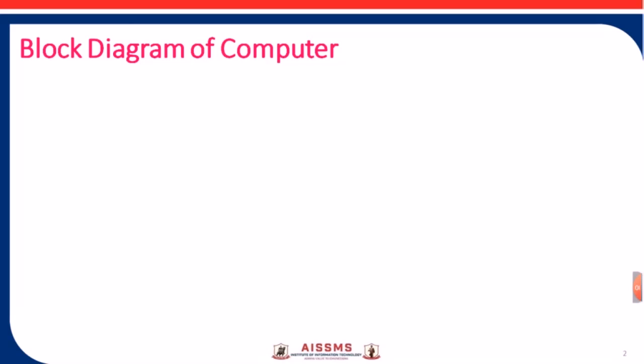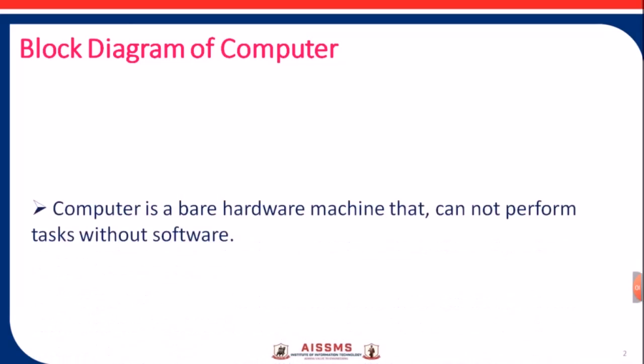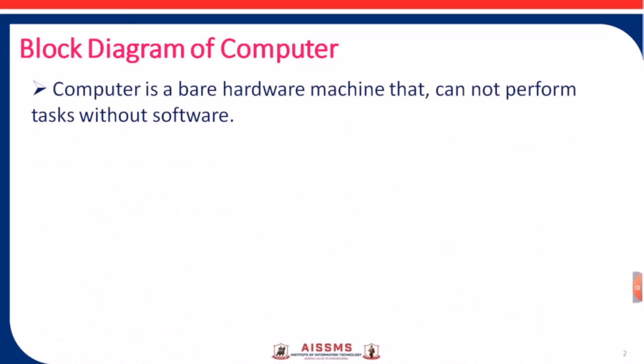Initially we are going to study what is the block diagram of computer. So we know that computer is mainly divided into two parts: hardware and software. Computer is a bare hardware machine that cannot perform tasks without software.